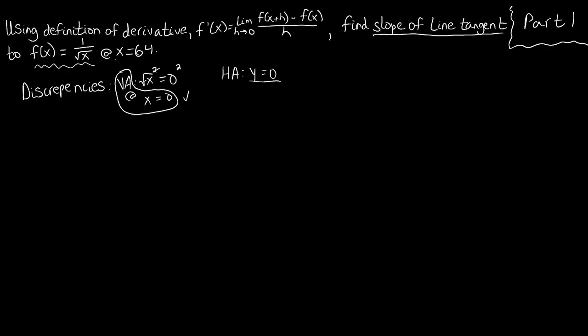For any positive x in our domain that we take the square root of, we're always going to get a number larger than zero. As x grows arbitrarily large, f of x grows arbitrarily close to zero, so the limit is zero, but the value of our function will never actually become zero. So we know this horizontal asymptote is not going to pose a problem for us either. We're all good with our discrepancies — they shouldn't play a huge part in this problem.